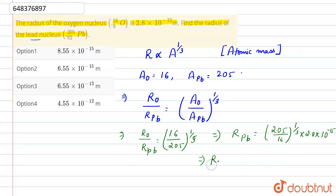So after calculating, we will get radius of Pb, that is lead, to be equal to 6.55 into 10 power minus 15 meters.